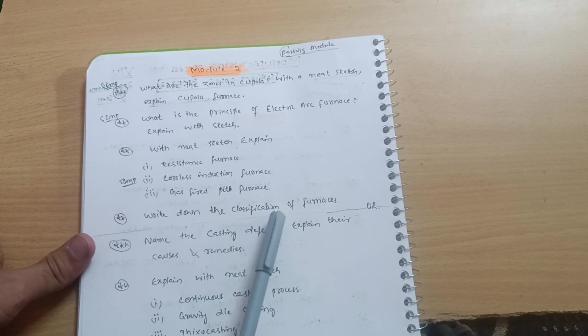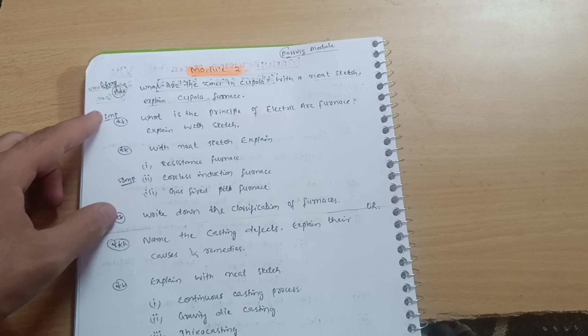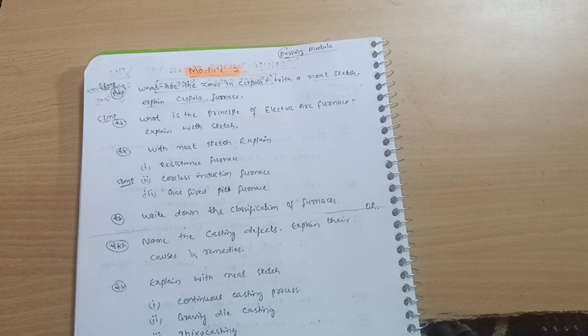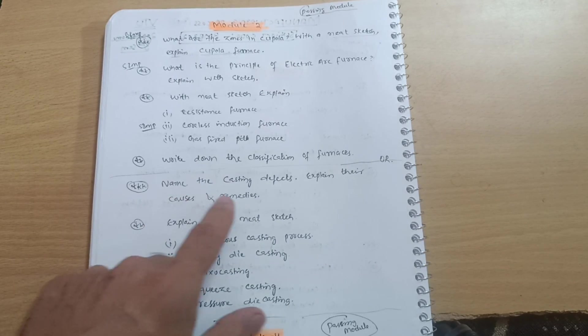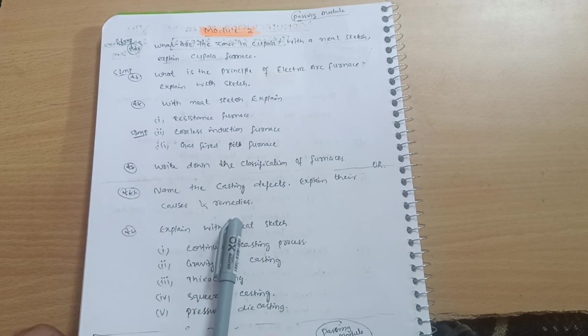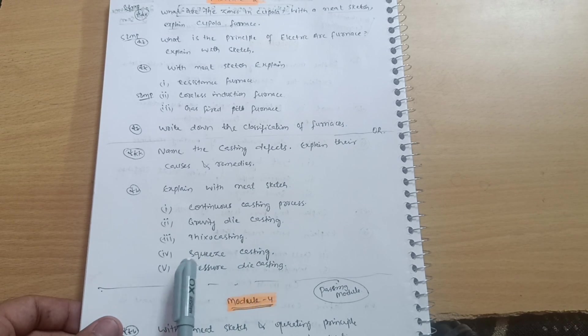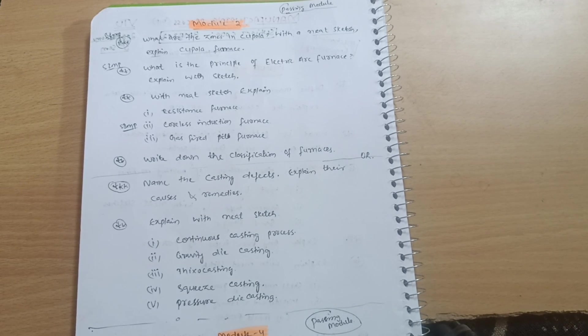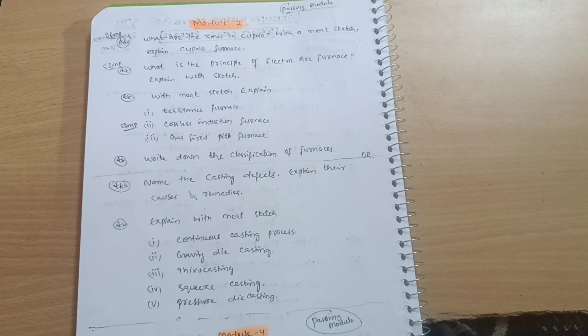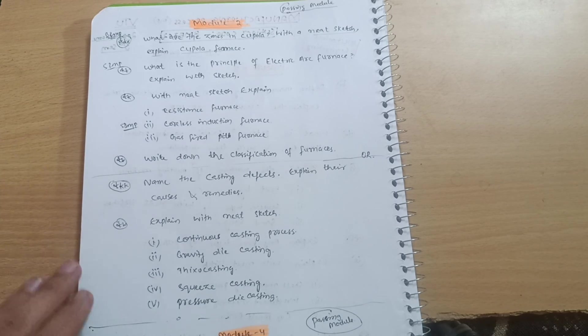Next is write down the classification of furnaces. Let me tell you one thing, if you want to cover only one chapter in Module 2, that will be enough to cover Module 2. You have to go through this part or either this part means name the casting defects, explain their causes and remedies, and explain with neat sketch continuous casting process, gravity die casting, thixo casting, squeeze casting, or pressure die casting. If you want to cover only one chapter you can go through, but better to prefer the first part. There are a lot of sketches which you have to prepare. Only focus on diagrammatic parts, rest of the theory you can write in your own words. I believe you will do it.